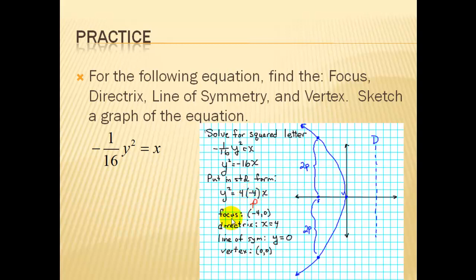Using our formulas that we had, the focus is going to be, as shown here, negative 4, 0. Our directrix will be a vertical line and it will be at the opposite value of p, or x equals 4. Our line of symmetry in this case is our x-axis, which the equation is y equals 0.